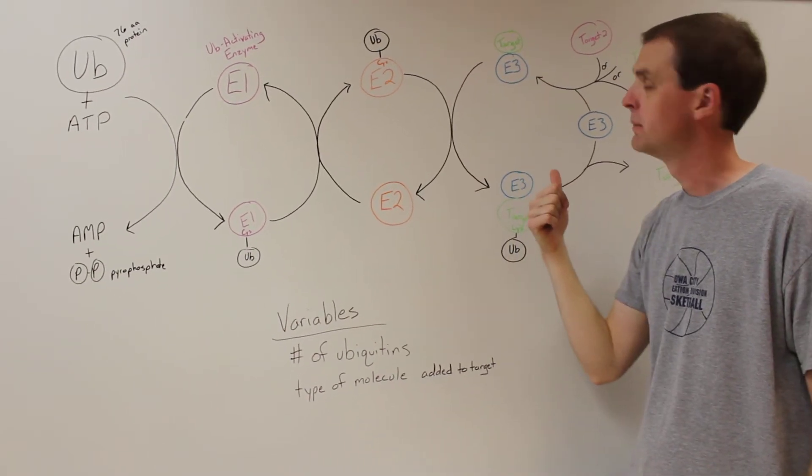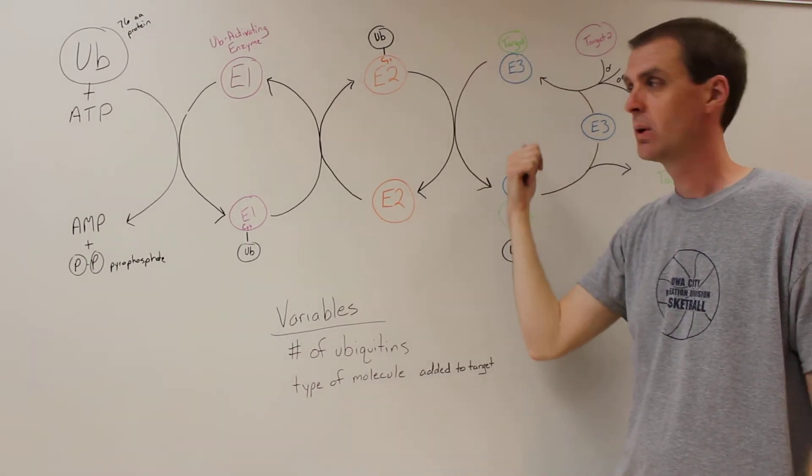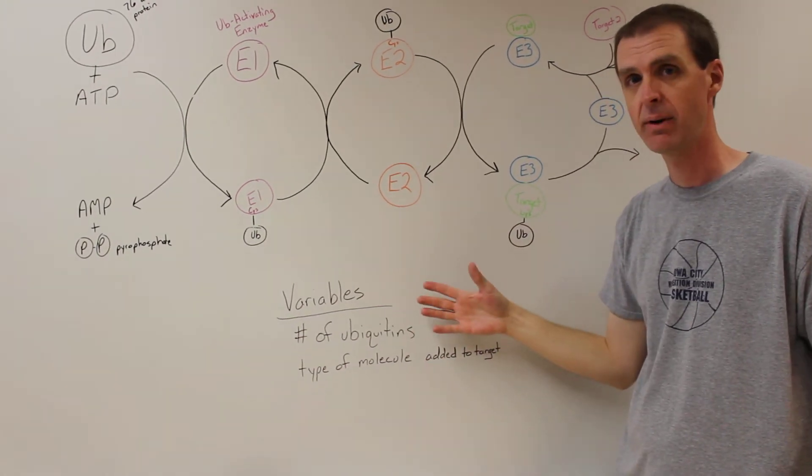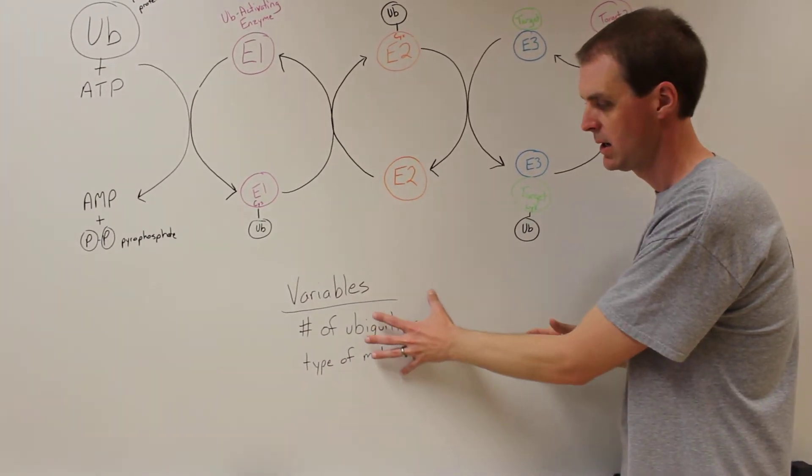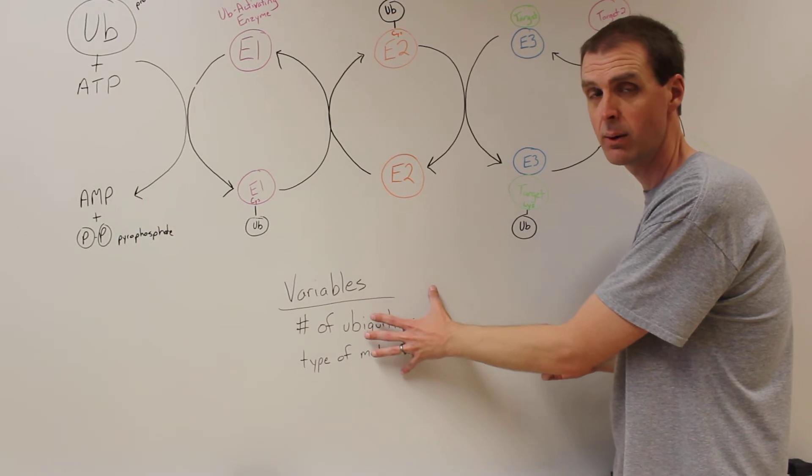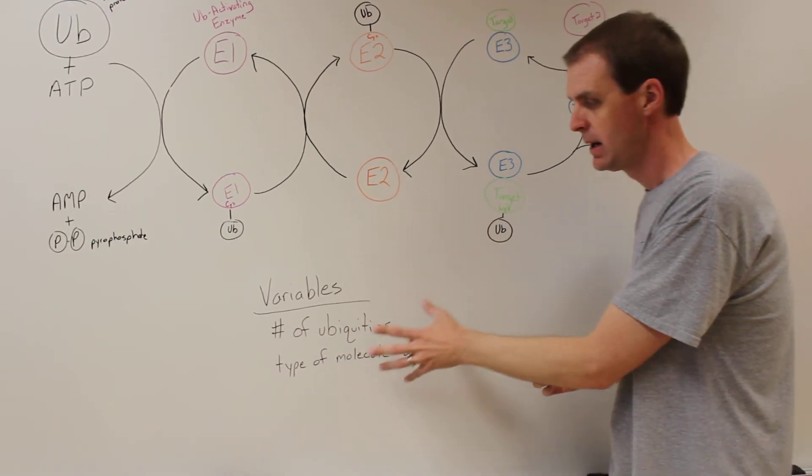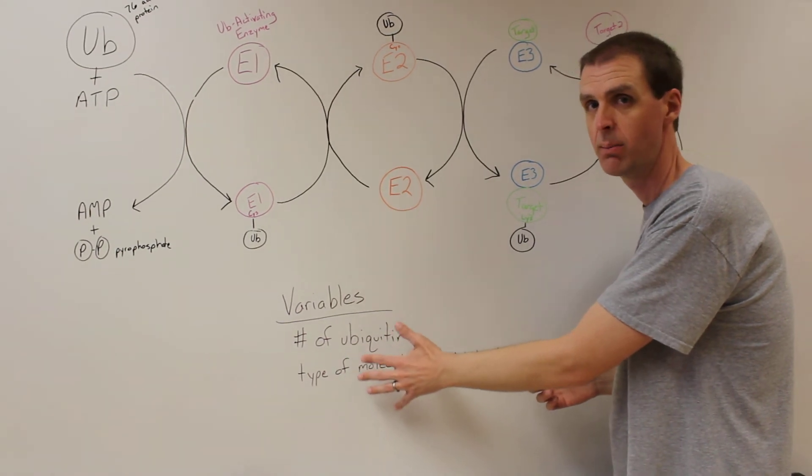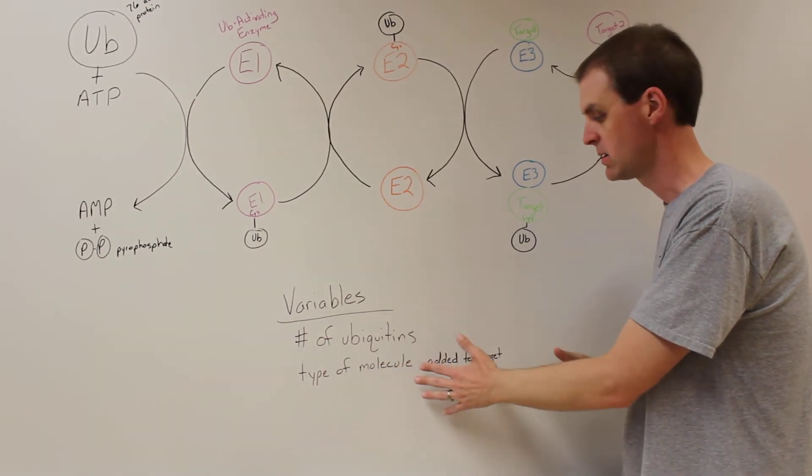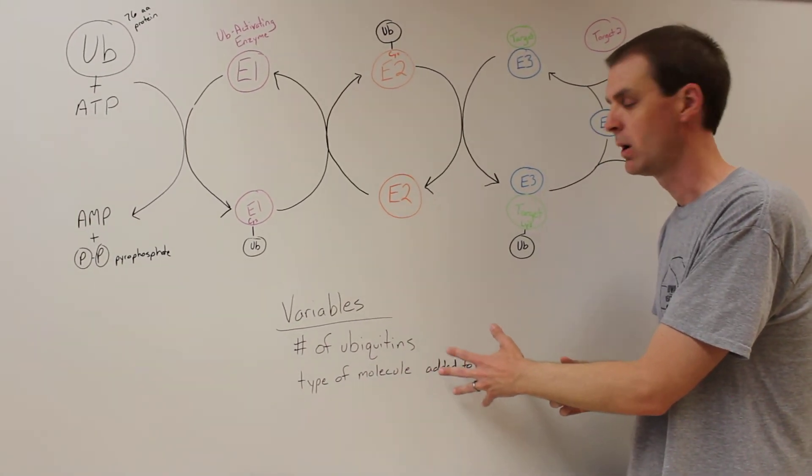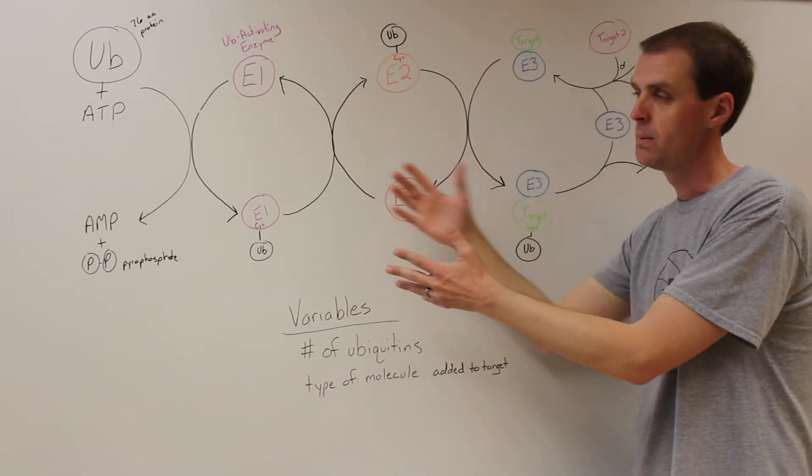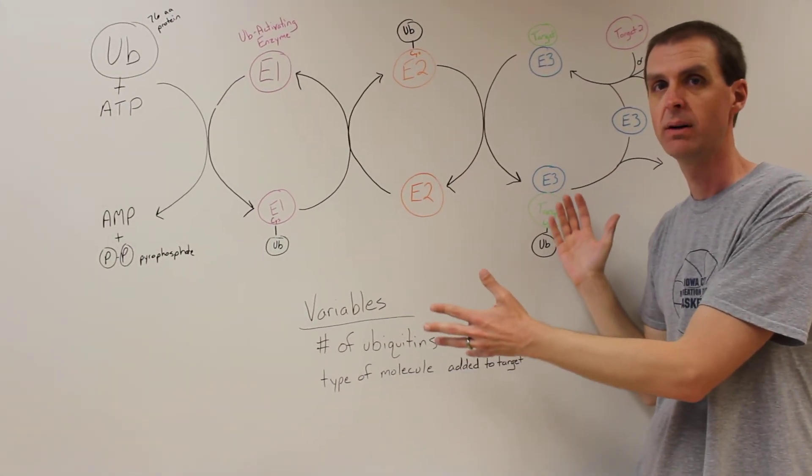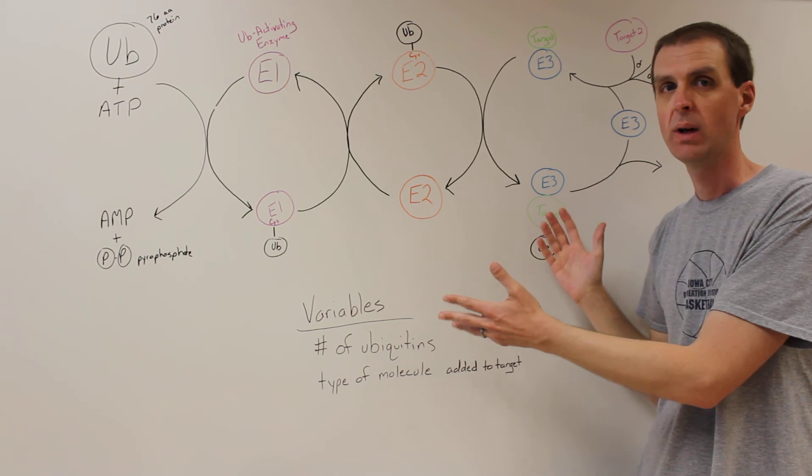So once we identify targets of these E3s, the proteins they interact with, we're going to then in the next step of our experiment look to see whether it is ubiquitin that is added onto the target or if it is a different type of what's called a ubiquitin-like protein. That would be the SUMO or the ISG15 and there could be more. Anyway, so that is the first step of our research program and we'll have follow-up videos.